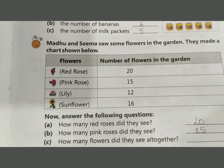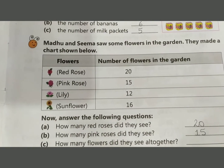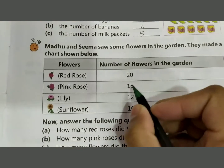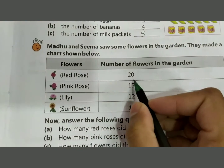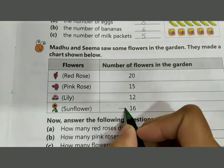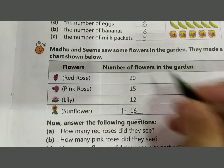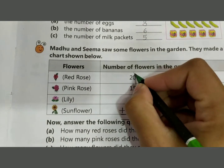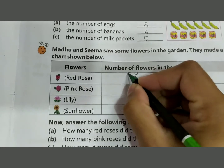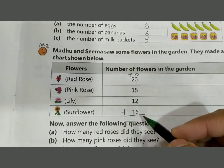Next: how many flowers did they see altogether? So, we add 20 plus 15 plus 12 plus 16. Use the addition sign and count. The ones place: 0 plus 5 equals 5. Then 5 plus 2.